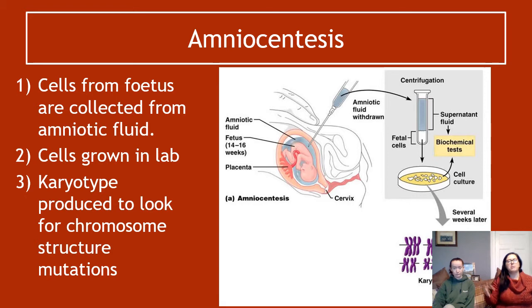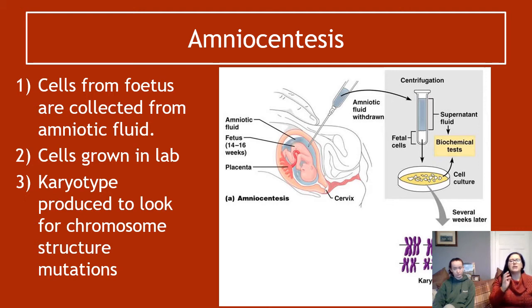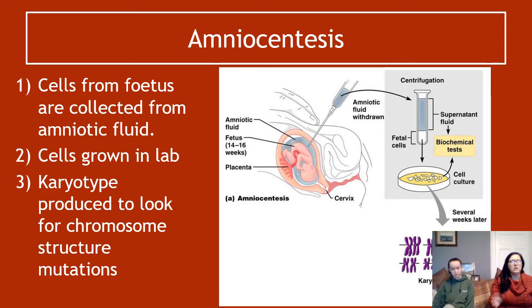Skin cells are constantly being shed by us all the time — babies and fetuses are no different; they shed skin cells into the amniotic fluid. The aim is to collect a sample of the amniotic fluid surrounding the baby, which should contain some skin cells from the fetus. Because there might only be a tiny number of cells, those cells need to be grown up in a lab to make a reasonable-sized sample, so genetic testing can be done several weeks later.